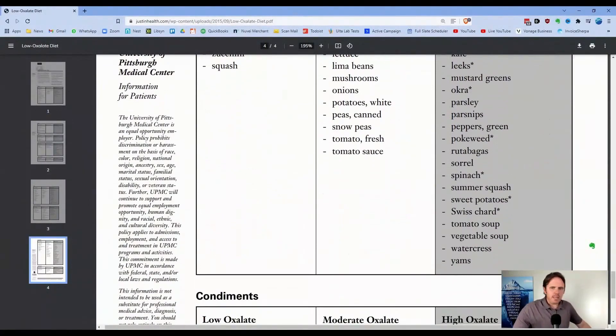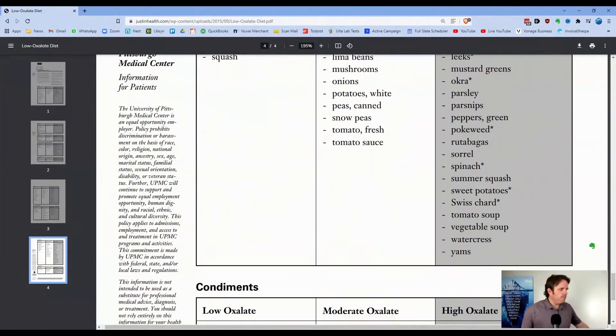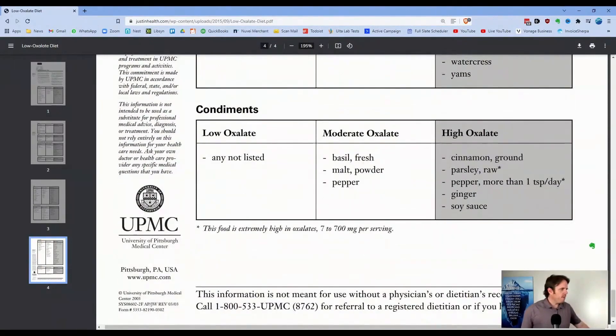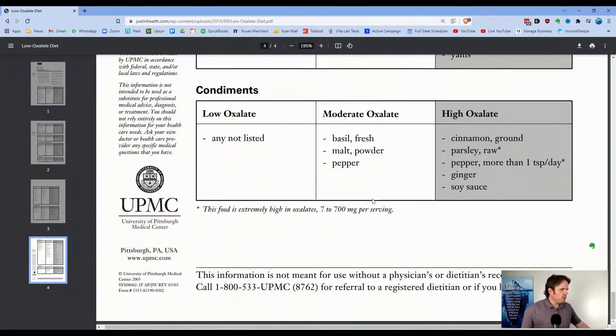And so I just recommend if you are someone that has a lot of joint pain, we can always test and run a specific organic acid test and see if those oxalates are high. If they are, we can work on cutting them out for a period of time. It's worth giving them a try. This kind of gives you an idea of what's low, what's high here.